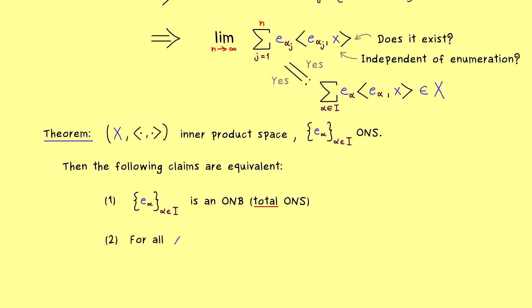Moreover, Parseval's identity is just Bessel's inequality without the inequality. More precisely, we have that the norm of X squared is equal to the infinite sum. And there we already know, it's a well defined countable infinite series, where the absolute value squared goes in. This is what we call Parseval's identity, and it just tells us that in the case of an ONB, Bessel's inequality becomes an identity.